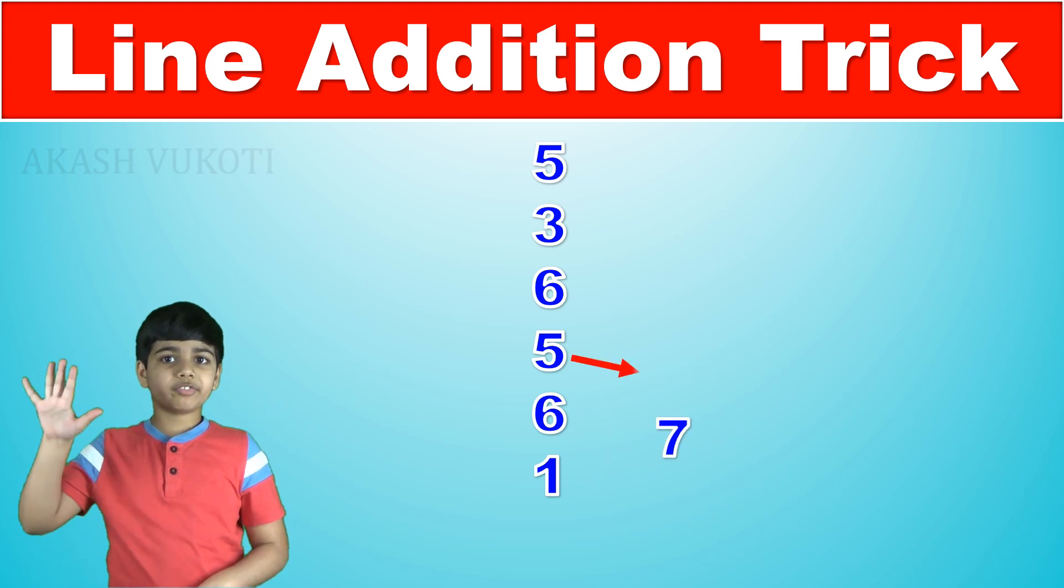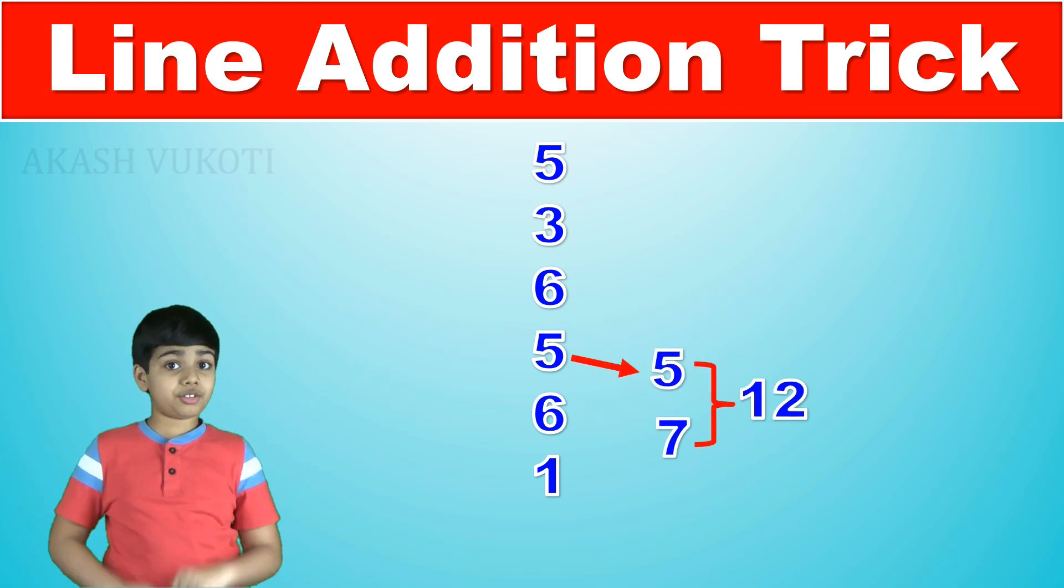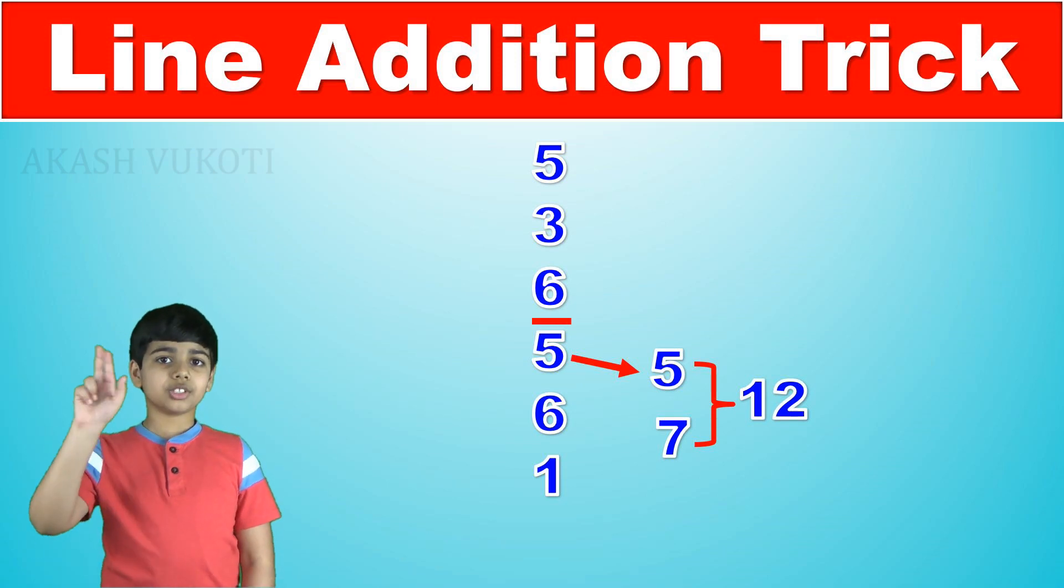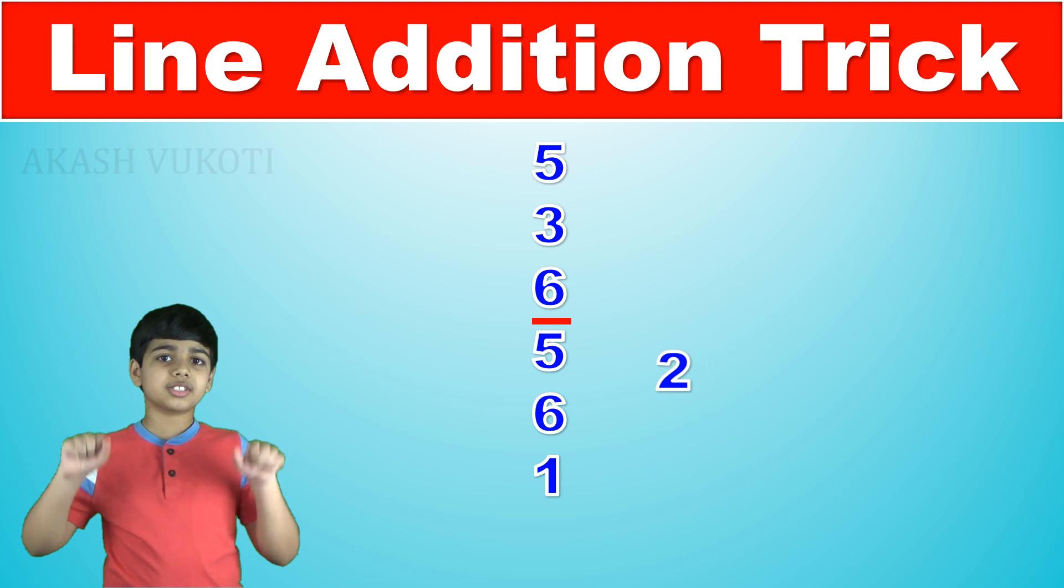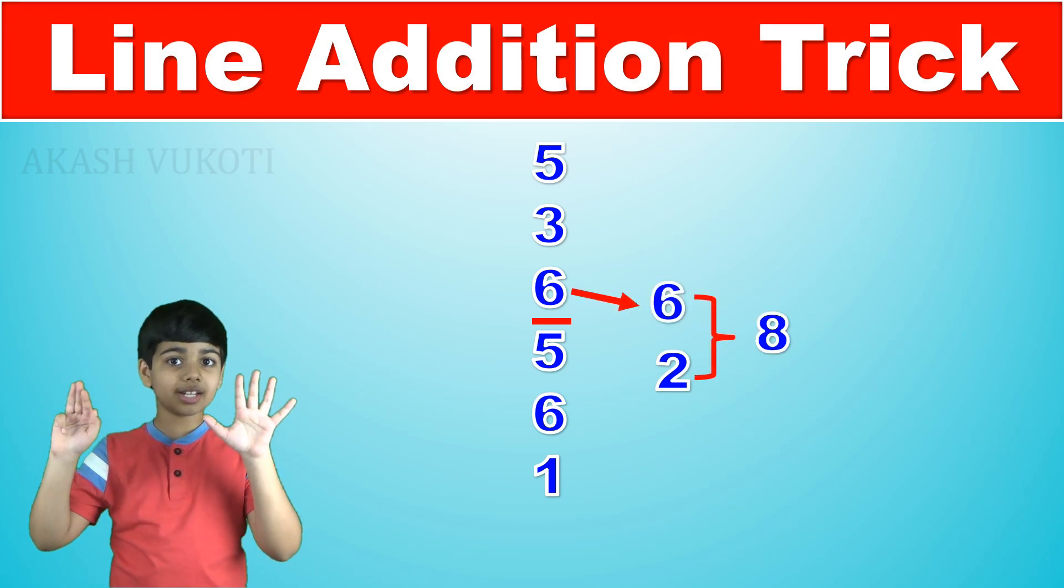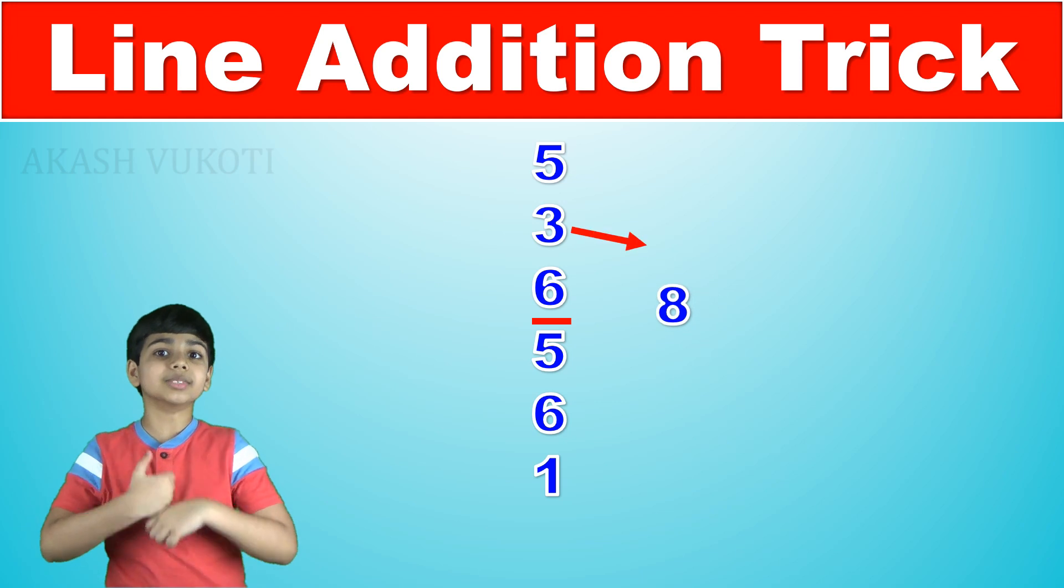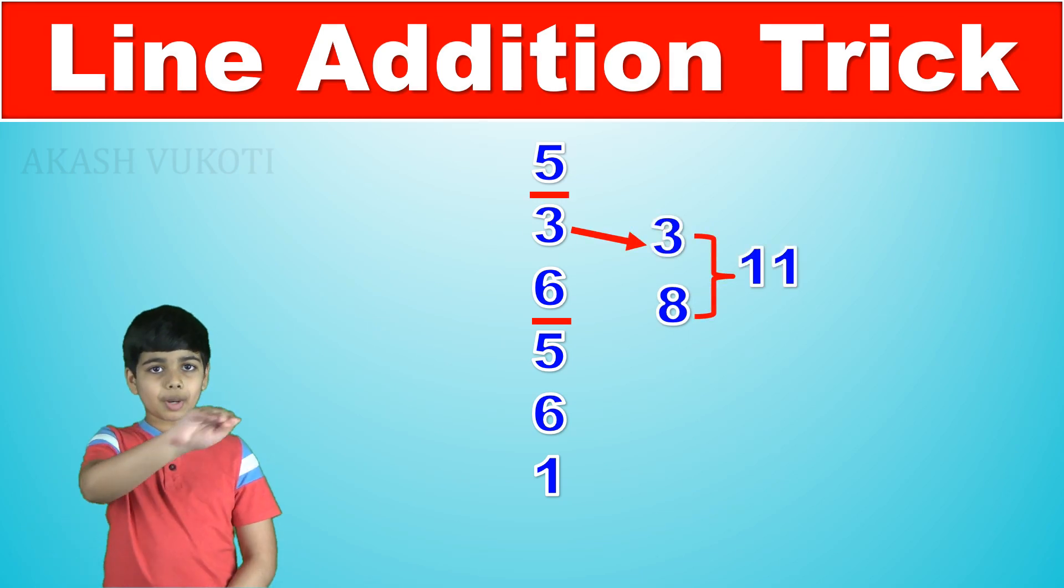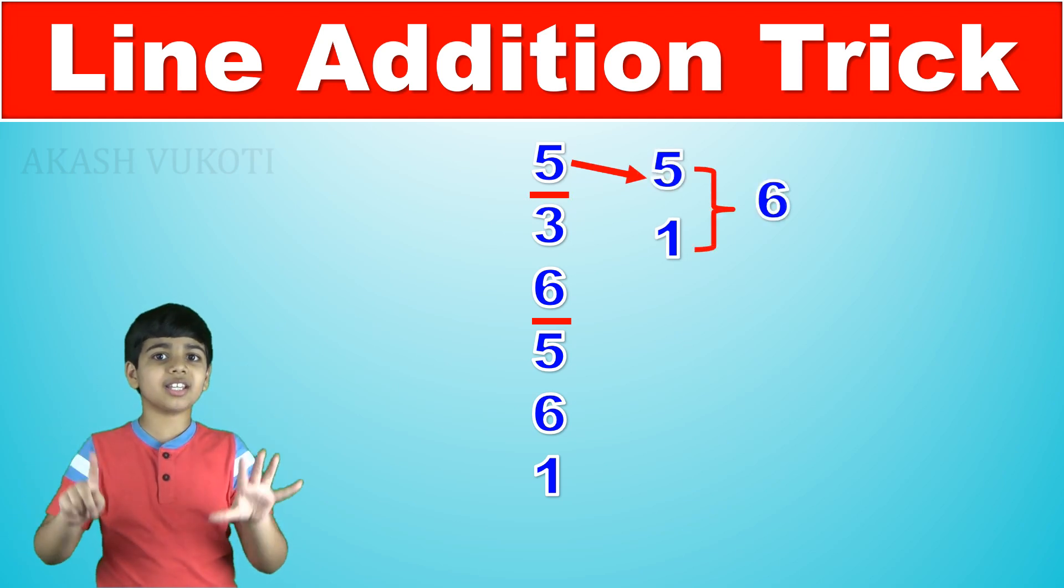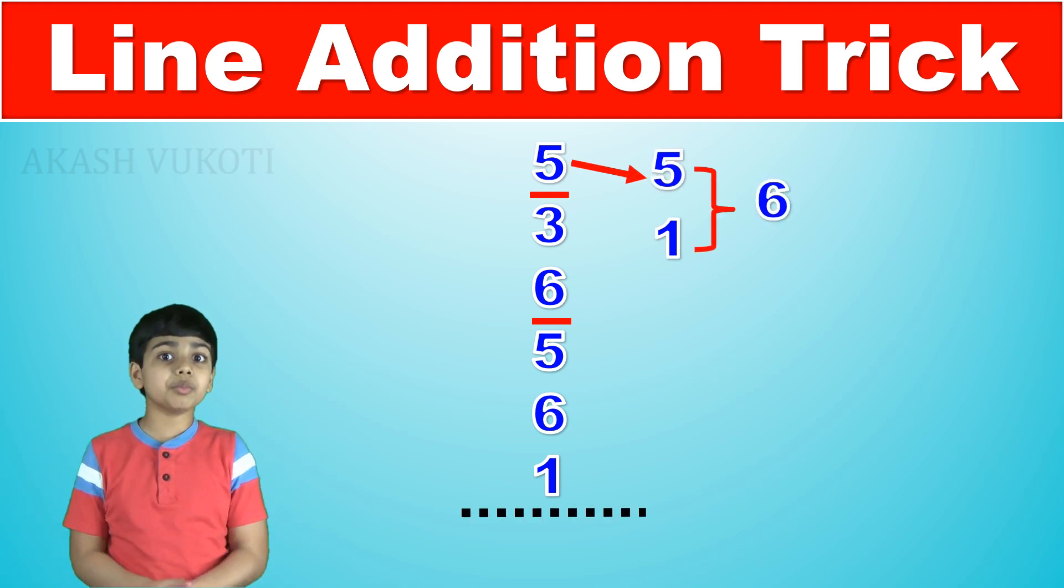We begin by adding 1 at the bottom plus 6 which becomes 7. Then 7 plus 5 is 12 which is greater than 10, so we drop a 10 there, draw a line and we are left with 2. 2 plus 6 is 8. And then 8 plus 3 becomes 11 so we have to drop a 10 there again and get 1.